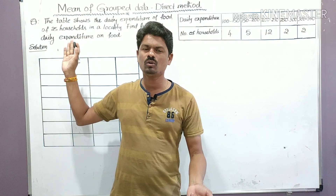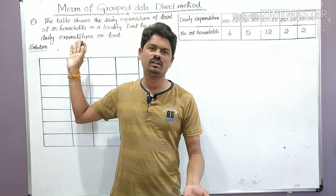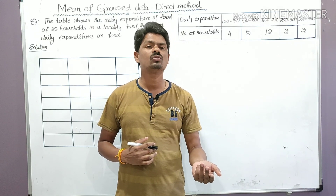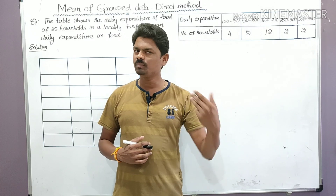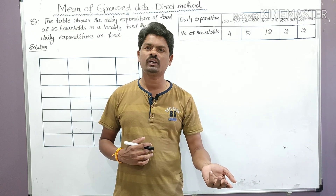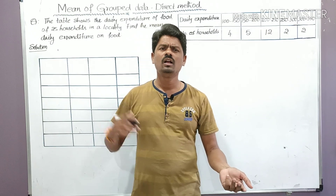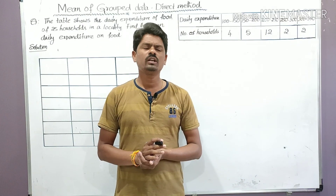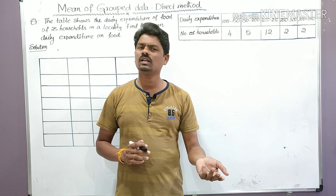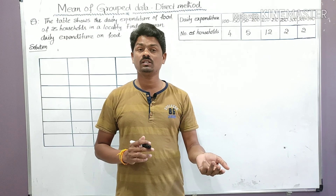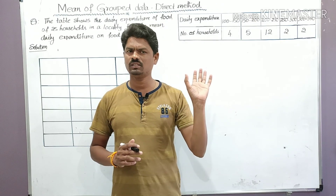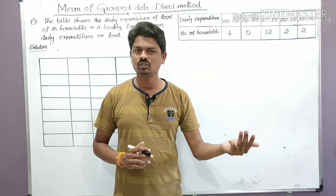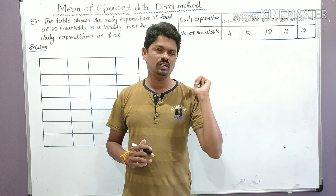If you have to find the mean of the data using the direct method, you use the direct method formula. If you have to find the mean using the assumed mean method, you use that formula. Sometimes the question doesn't mention the name of the method - it simply says 'find the mean.' In that case, you can use any one of those three methods, whichever you find easy.